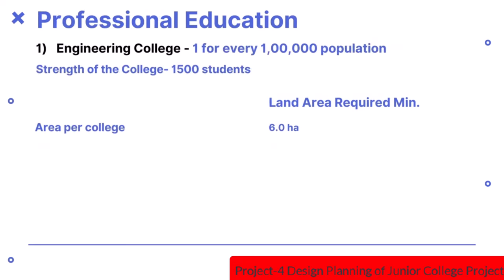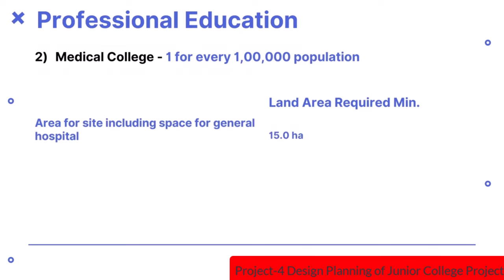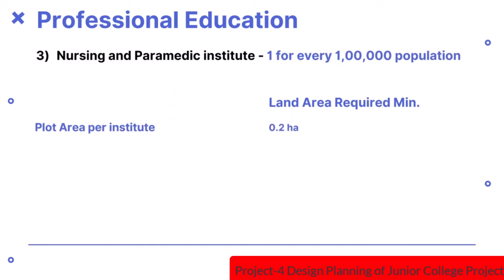For professional education: engineering college — one per 1 lakh population, strength 1500 students, area 6 hectares. Medical college — one per 1 lakh population, area of site including general hospital 15 hectares. Nursing and paramedic institute — one per 1 lakh population, plot area subject to Nursing Council of India or Ministry of Health norms, minimum land area 0.2 hectares.